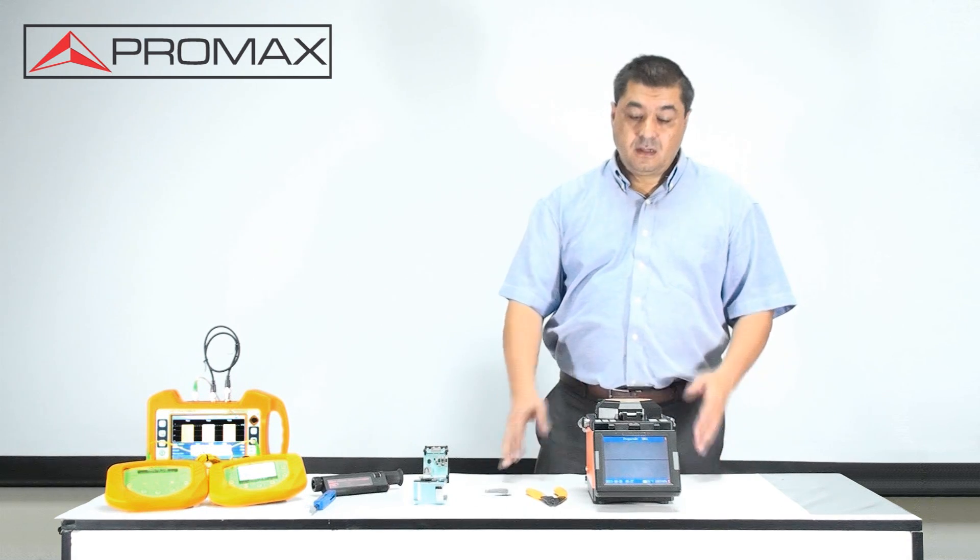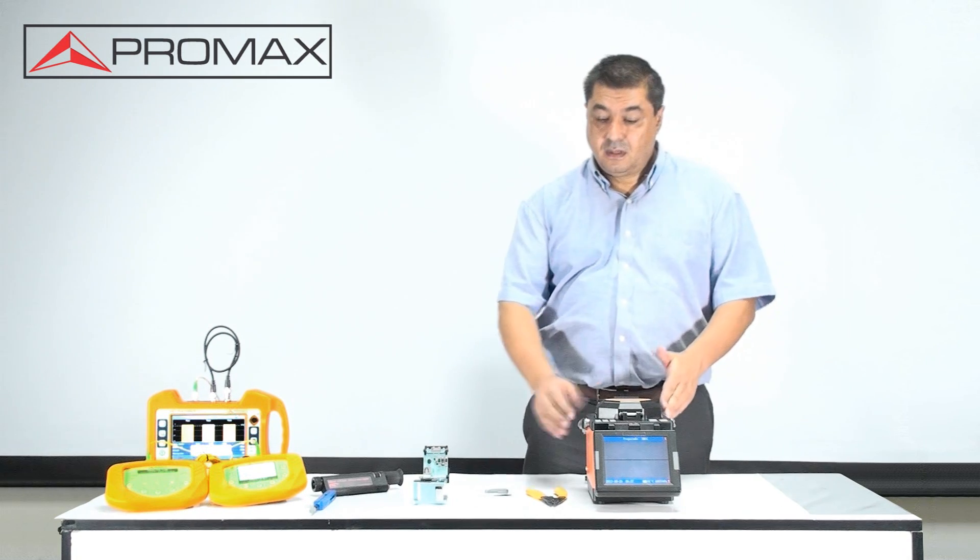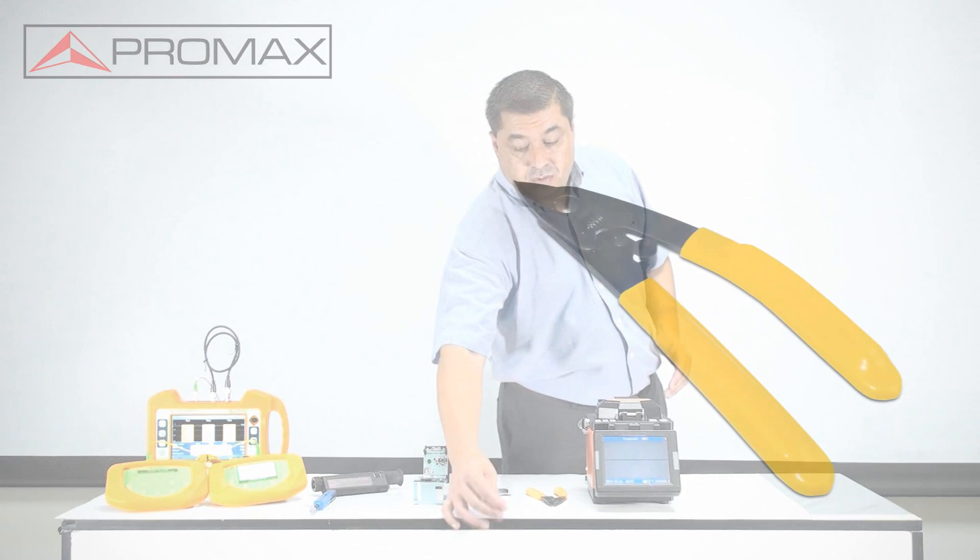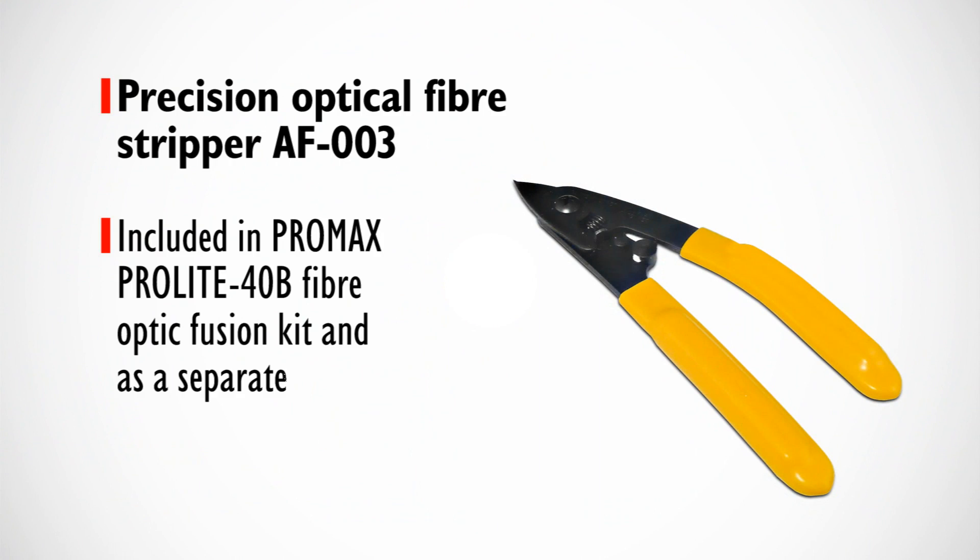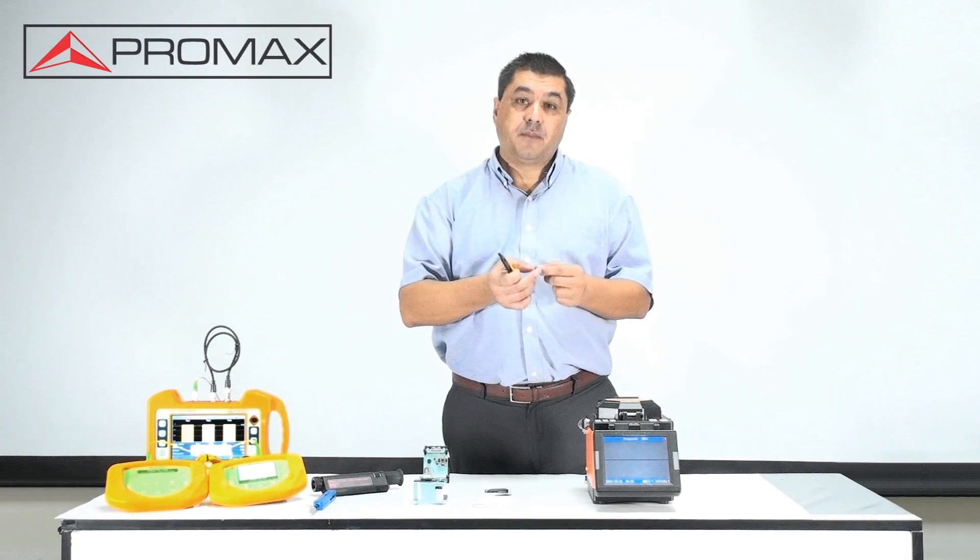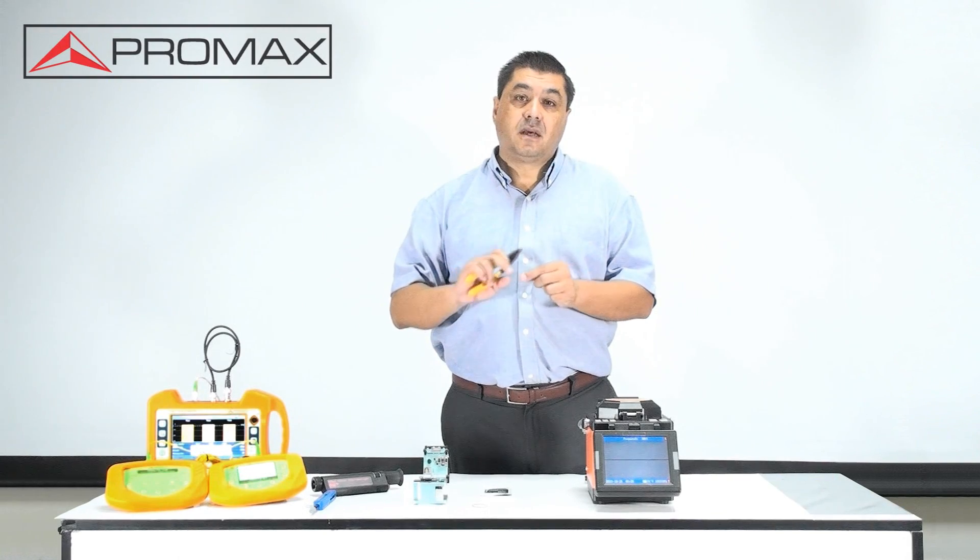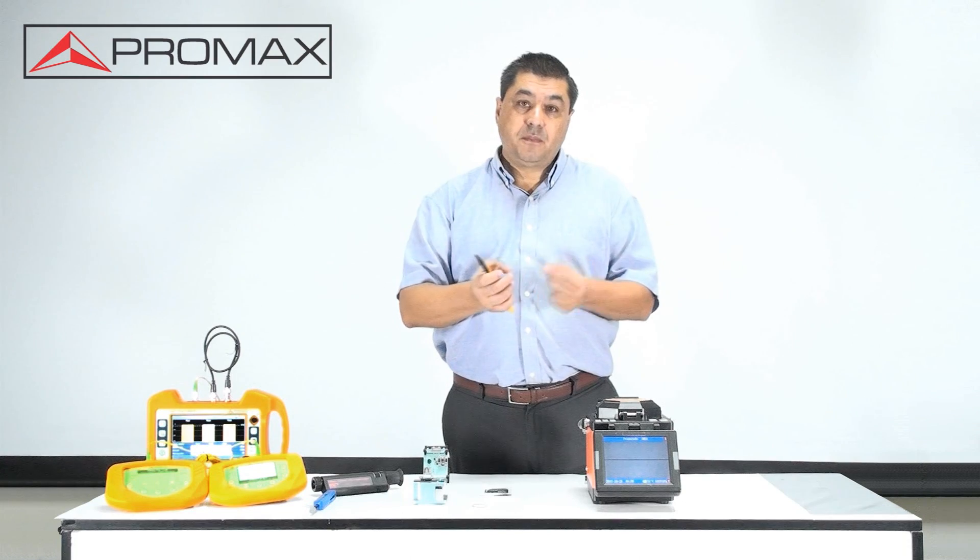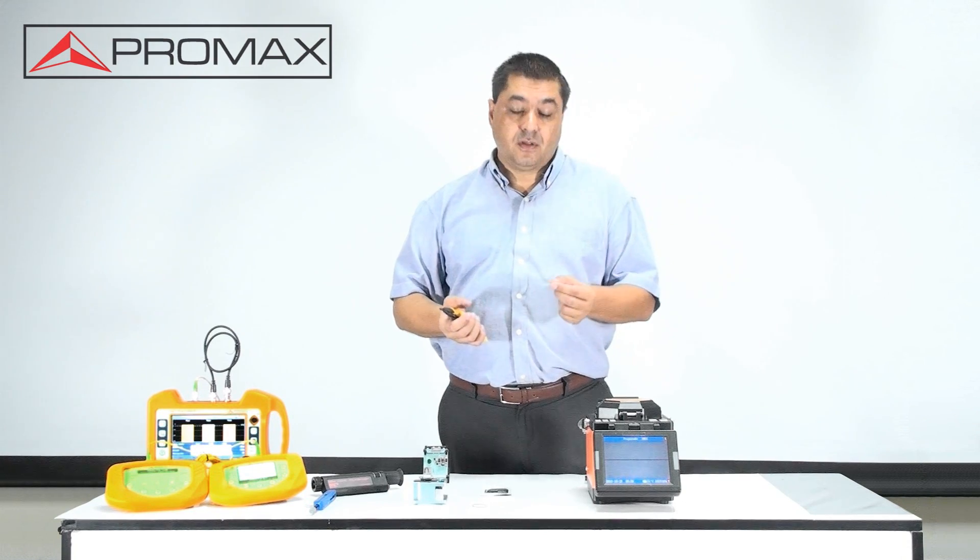Let's make a video tutorial of the PROMAX Fusion Splicer. Before starting the fusion process, the first thing to use is a fiber optical stripper. It removes the first plastic layer of the fiber and leaves it clean so it can be placed into the splicer.